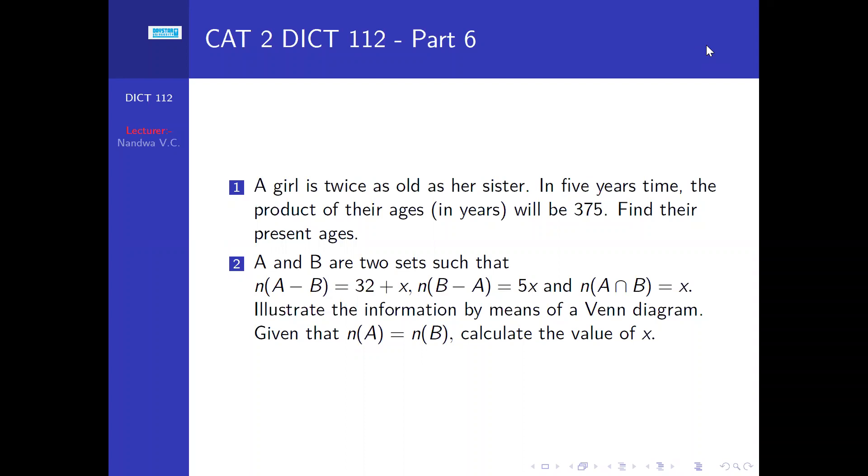A girl is twice as old as her sister. In five years time, the product of their ages in years will be 375. Find their present ages.